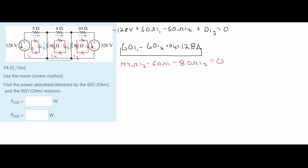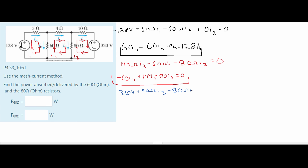Simplifying that gives us our mesh 2 equation. Now for the last mesh: we have a voltage going in the same direction as our current, so it's a positive 320 volts. We add 90 ohms times I3, because we're adding all resistors in series for this circuit, minus 80 ohms for I2, set equal to zero. These are our three simplified equations.